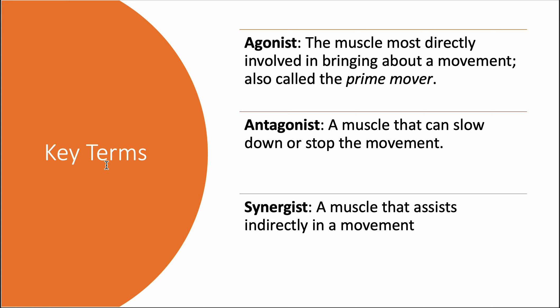Some other key terms: agonist, antagonist, synergist. An agonist is the muscle most directly involved in bringing about a movement — also called the prime mover. The antagonist is the muscle that slows down, decelerates, or stops the movement — the opposing muscle. A synergist is a muscle that assists indirectly in the movement; it works in coordination with the agonist to help complete whatever movement you're trying to perform.